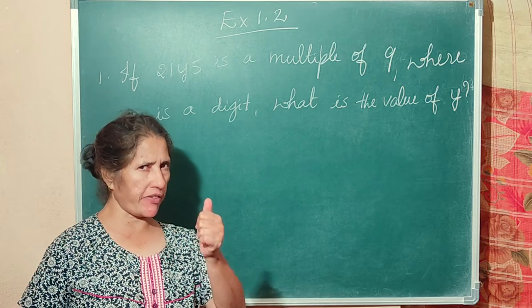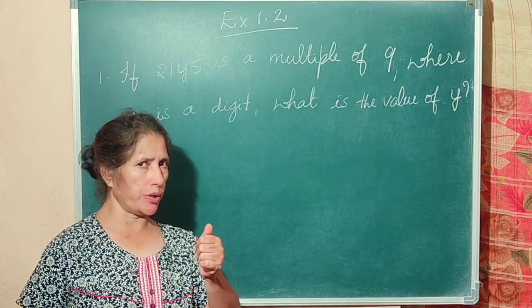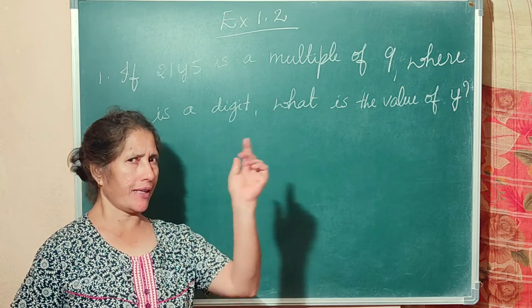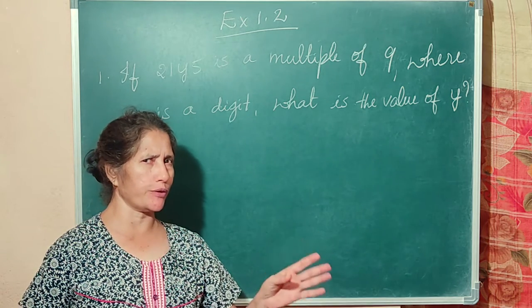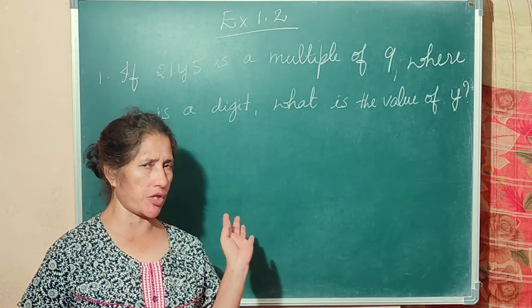A number is divisible by 2 when the last digit is either 0, 2, 4, or 6.